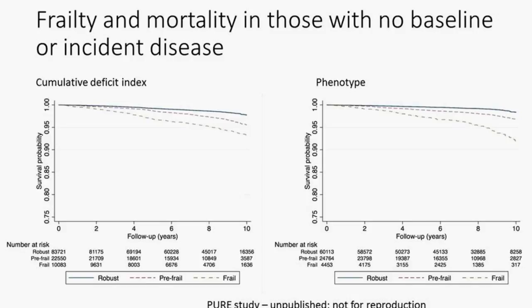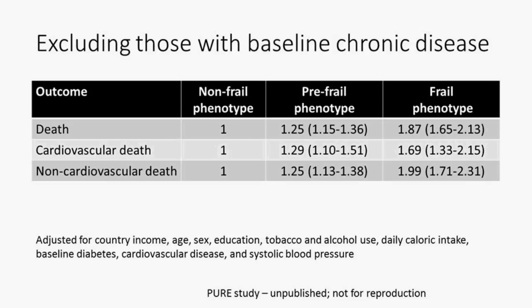In a similar analysis, we excluded those with any chronic disease at baseline and examined whether frail and pre-frail status predicted death, cardiovascular death, and non-cardiovascular death after adjustment for a range of confounders including age, sex, and education. The relationship remains strong: frailty is still associated with nearly a two-fold increase in the risk of death compared to someone who is non-frail, seemingly independent of whether or not one has a non-chronic illness.